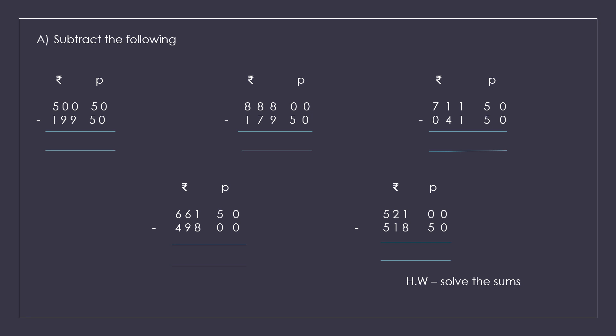Here are five sums on the screen. You can read them one by one. The first question: 500 rupees 50 paise minus 199 rupees 50 paise. You should subtract the rupee and the paise and find out what is the correct answer.